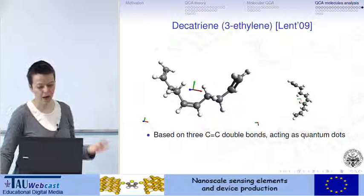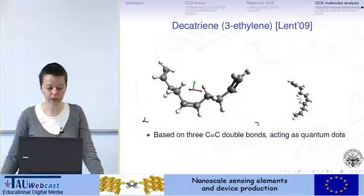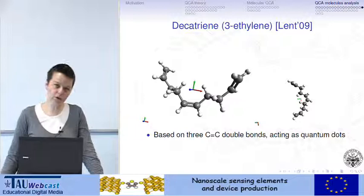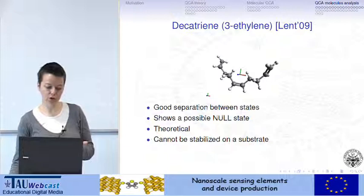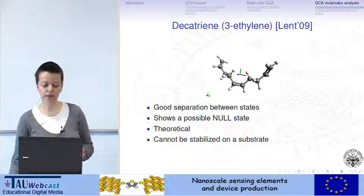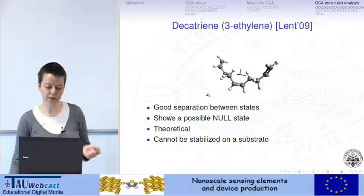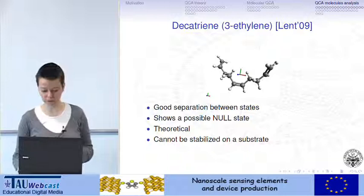That molecule was studied only in theory. More recently, an interesting molecule based on three ethylene groups was proposed by Lent, called a decatriene, based on carbon-carbon bonds. It represents a three-dot molecule showing good separation between states and a possible null state — the two extremes are the 0 and 1 points, and the middle is the null state. Still, it is theoretical in the sense that it cannot be stabilized on a substrate as it is, and some synthesis problems have been noted.